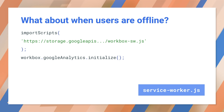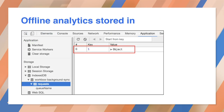This adds a fetch event handler to the service worker that only listens for requests made to the Google Analytics endpoint. If an analytics network request fails, the handler stores the request in IndexedDB. It will then replay them when back online. You can test this behavior by enabling offline mode in developer tools and then triggering Google Analytics hits on your app. IndexedDB will show a list of URLs that represent the unsent hit requests.